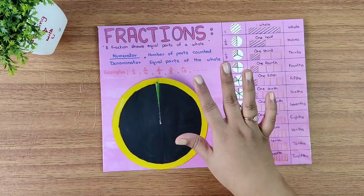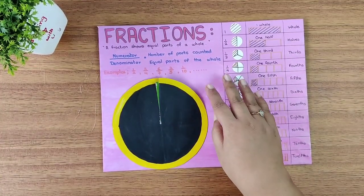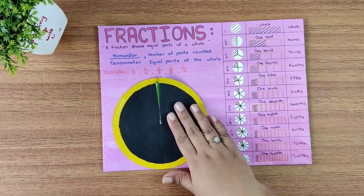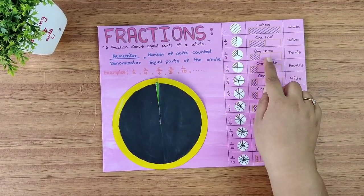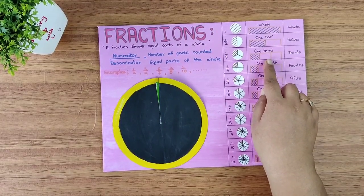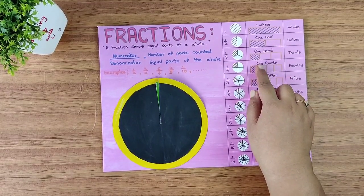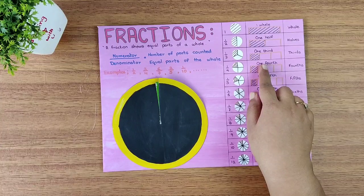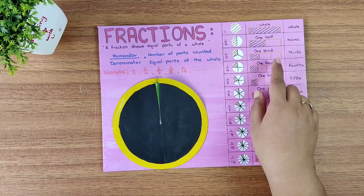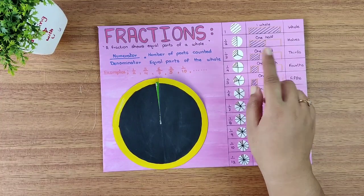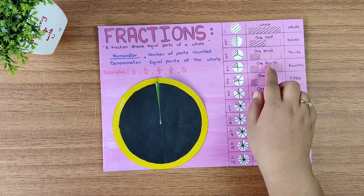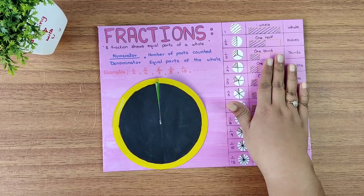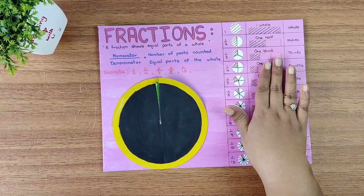Fractions can be shown in four different ways: one is the circle, another is with the help of the fraction bar, then we can also use the number line, and also from groups. Here I have shown two methods — the circle and the fraction bar.